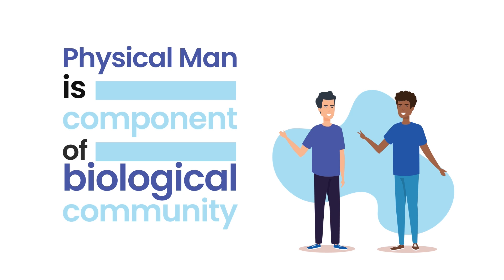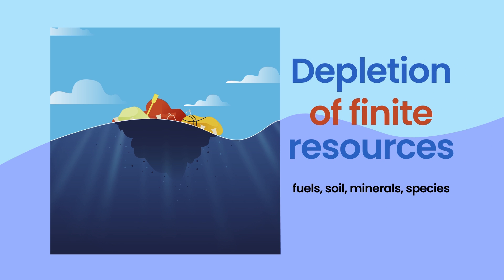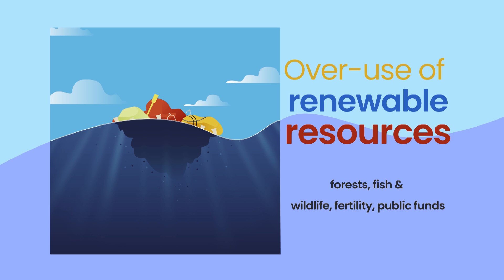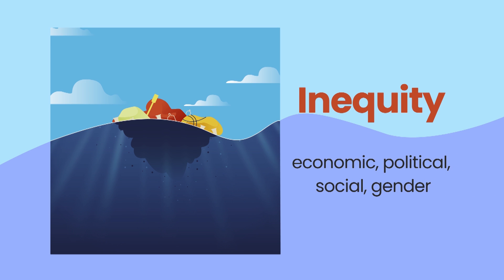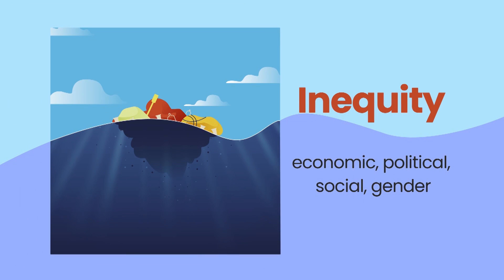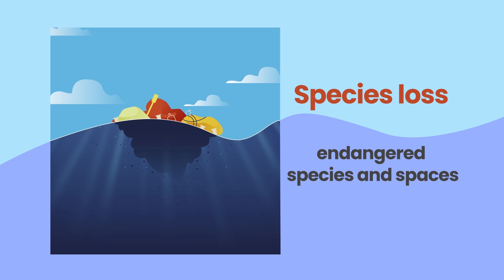It can also be discussed why the issue of sustainability arises. There are many problems: depletion of finite resources, overuse of renewable resources such as forests and wildlife, pollution including air pollution, water pollution, noise pollution, and soil pollution, inequity existing in society — economic, political, social, and gender differences — species loss, endangered species, and most importantly the very existence of human beings. For all these reasons, knowing about sustainability is very important.